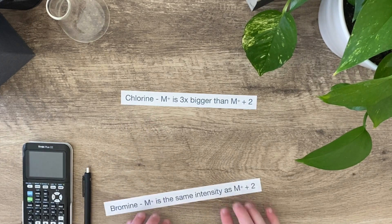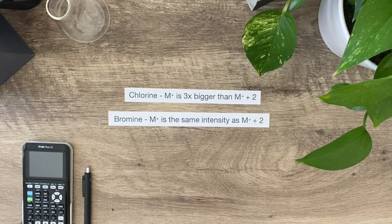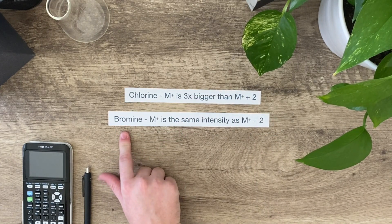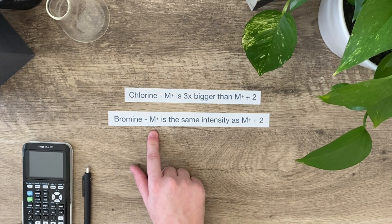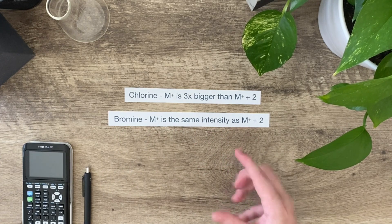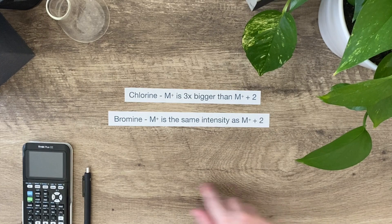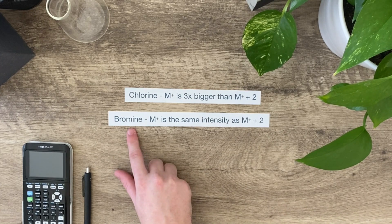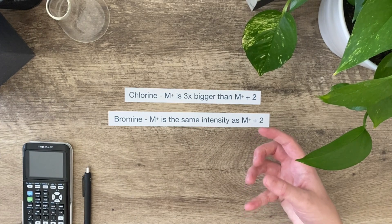The other one that we can look at is bromine. Bromine has two isotopes that are relatively equal in abundance, which is why if you look at a bromine molecule, the M+ peak is identically in size or the same size as the M+2 peak. That's because the bromine isotopes are roughly the same in abundance, and that shows presence of a bromine.